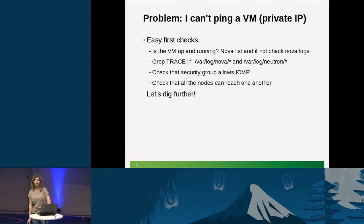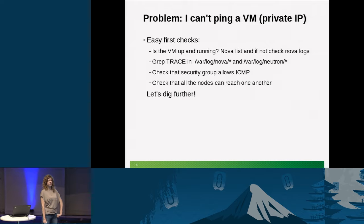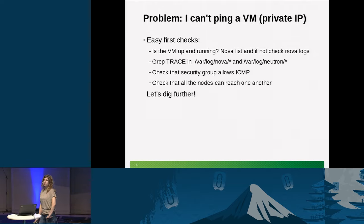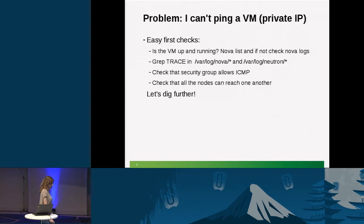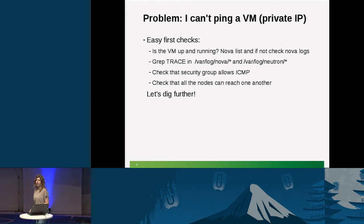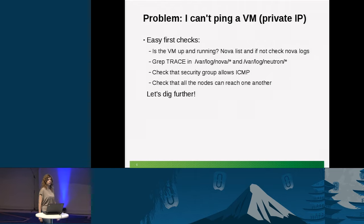Another trivial check: remember that the default security group does not allow ICMP — you have to configure that. If you don't, the traffic will be blocked and you won't be able to ping your VM. Also check the underlying physical network: make sure the nodes of your cloud are able to ping each other, because if you can't reach a node, of course it won't work.